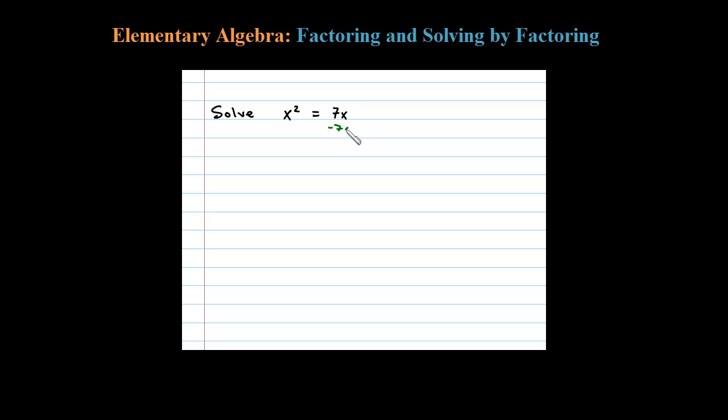set it equal to 0 and then solve it by factoring. In this case we'll have x² - 7x = 0. That's the first step. Once you get it equal to 0, you try to factor it.